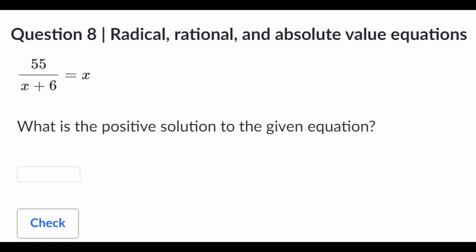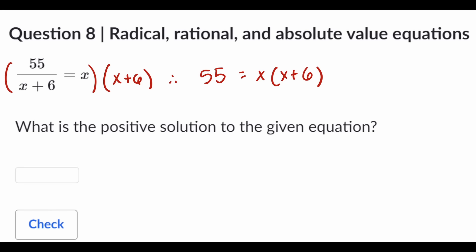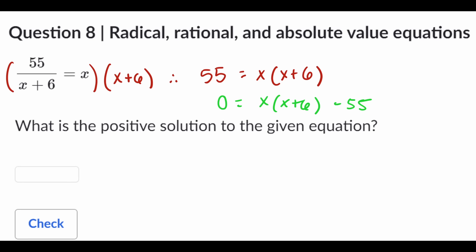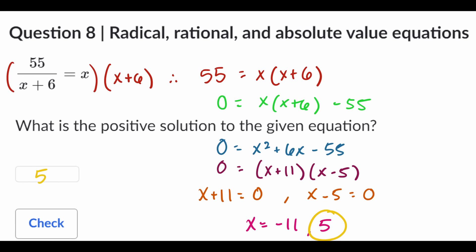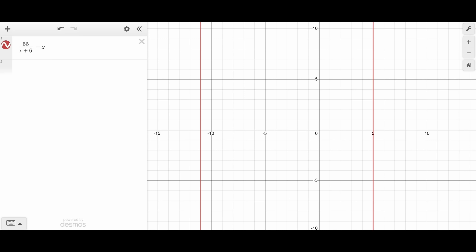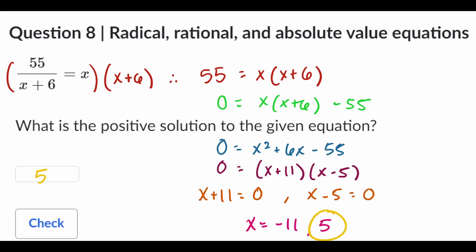Now on to single variable equations. Most people are sheep, and they're going to solve this problem by moving x plus 6 to the other side, subtracting by 55, distributing, factoring, splitting up, rearranging, and picking the positive solution. But sigma males like myself are just going to copy and paste it into Desmos and look at where the vertical line is.